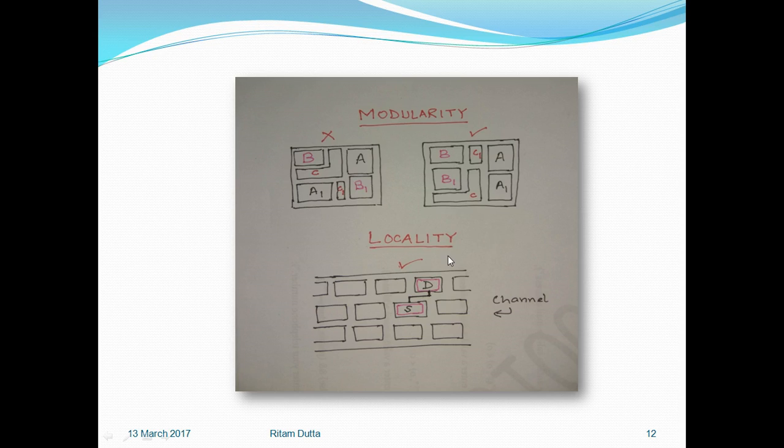Coming back to locality, this is a channel—a routing channel in between the CLBs. Each box here is a configurable logic block.